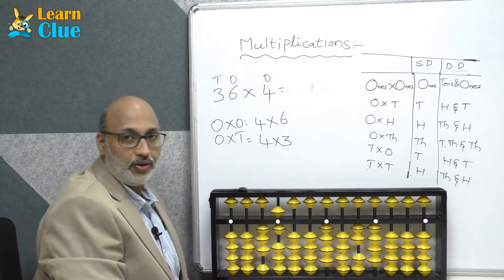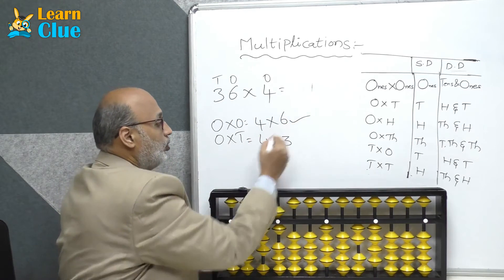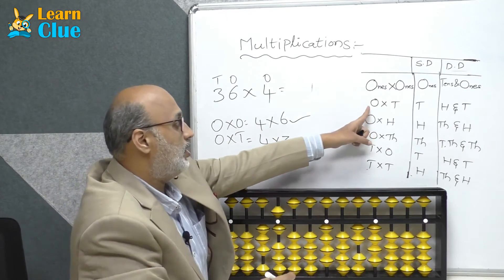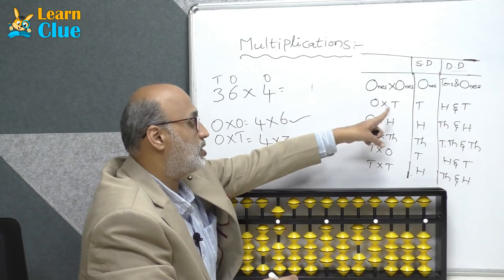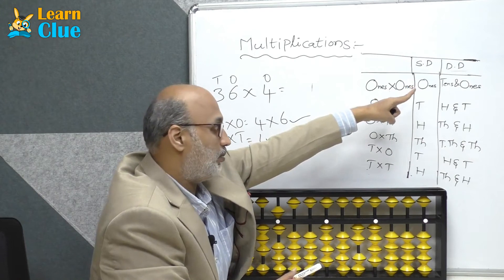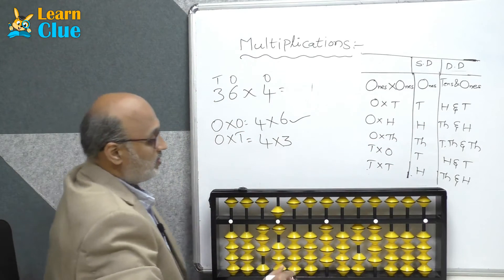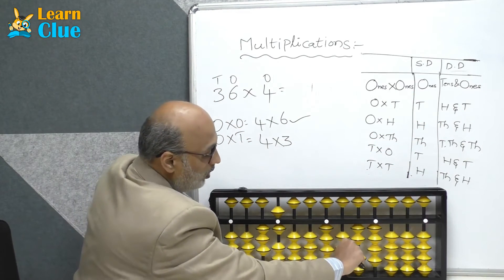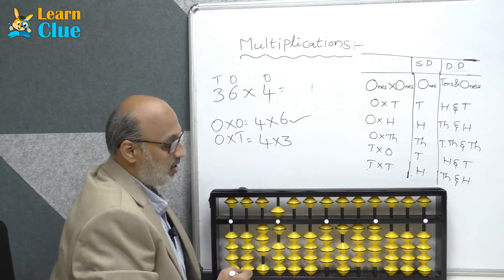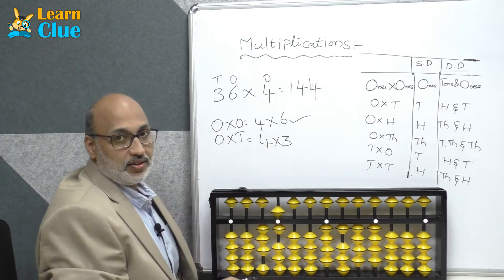Next, we have done ones into ones. Now we are supposed to do 4 into 3, which is 12. For ones into tens, if it is a double digit number, you are supposed to place it in the hundreds and tens place. So 12 you are supposed to put in the hundreds place and tens place. The answer is 144.